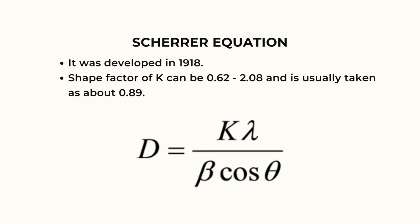It was developed in 1918. The shape factor of K can be 0.62 to 2.08, and is usually taken as about 0.89. It is only applicable for small things such as crystallite, but not applicable for grain or particle.